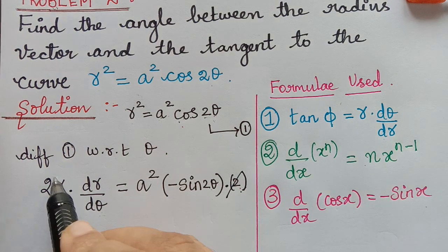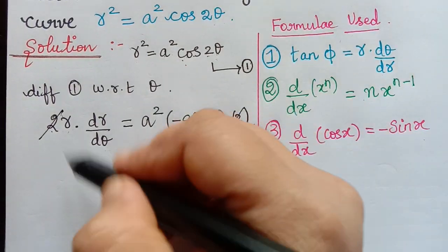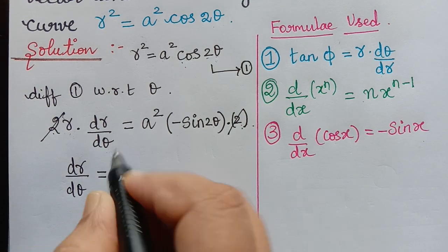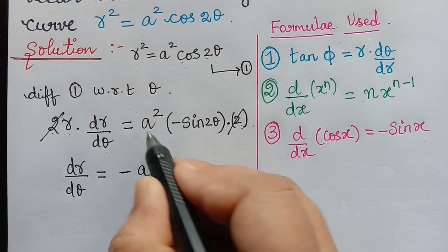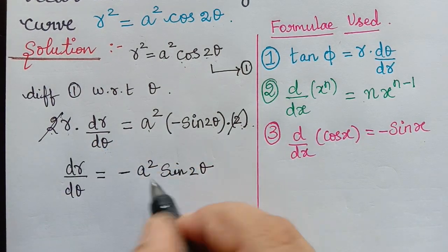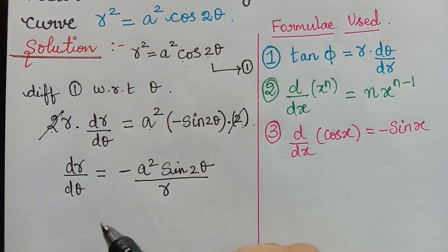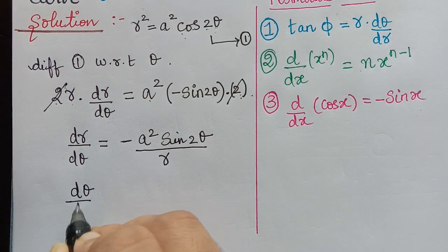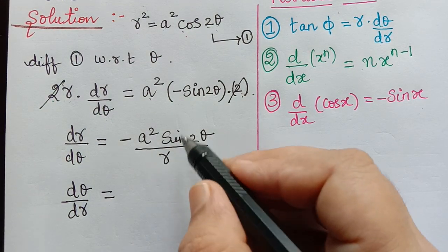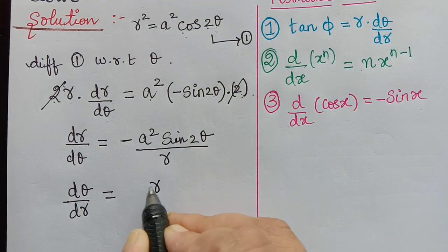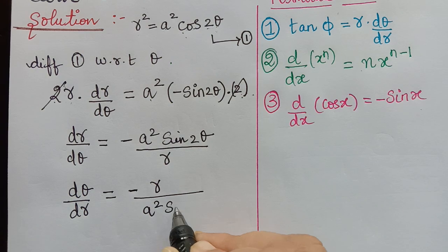We can cancel the 2 on the left with the 2 on the right. Taking r to the right side gives dr/dθ = −a²sin2θ / r. Taking the reciprocal, dθ/dr = −r / (a²sin2θ).